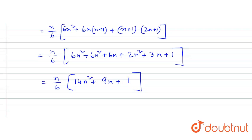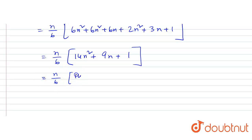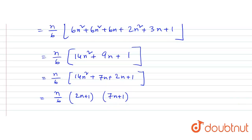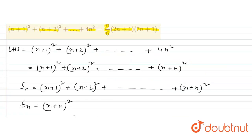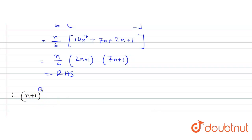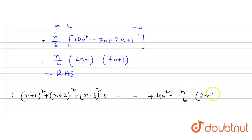Continuing, with n/6 as factor, we get 14n² + 7n + 2n + 1, which equals (2n+1)(7n+1). Therefore, (n+1)² + (n+2)² + ... + (4n)² equals n/6 · (2n+1) · (7n+1). This equals the right hand side, and the proof is complete.